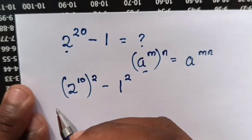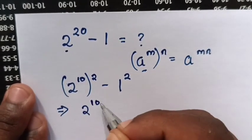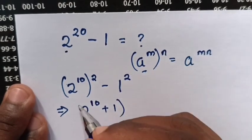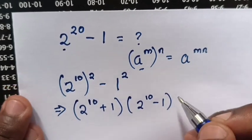Now our equation can be simplified as (2^10 + 1)(2^10 - 1) using the difference of squares formula.